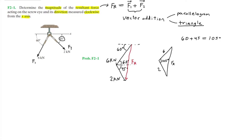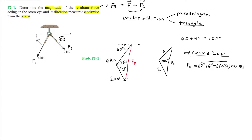Whenever we know two sides and an included angle of a triangle and we're trying to find the length opposite that angle, we can apply the cosine law. Using the cosine law: FR equals the square root of 2 squared plus 6 squared minus 2 times 2 times 6 times cosine of 105 degrees. Plugging that into the calculator, we get FR equals 6.8 kilonewtons — that is the magnitude of the resultant force.